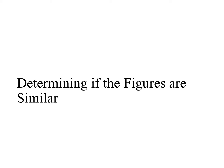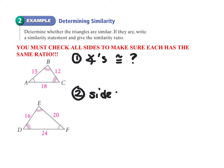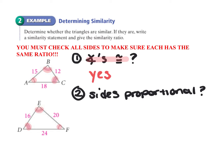Now let's practice determining if figures are similar. In order to determine if figures are similar, we have to check two things: are the angles congruent, and are the sides proportional? Both of these have to be true. Looking at the angles, I have one marking to one marking, two markings to two markings, three markings to three markings. Since I have three pairs of congruent angles, yes, the angles are congruent.